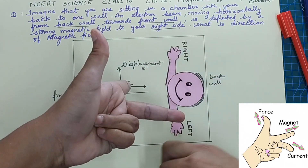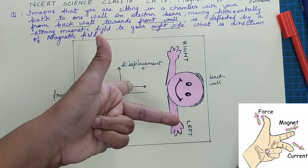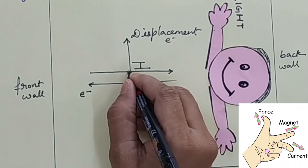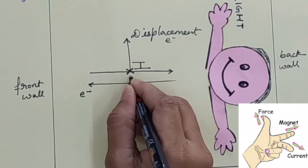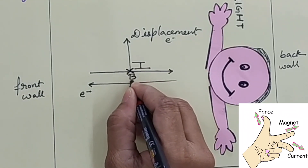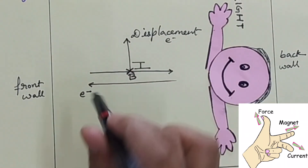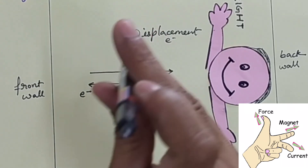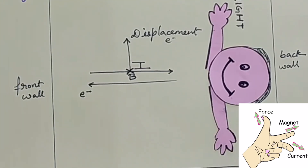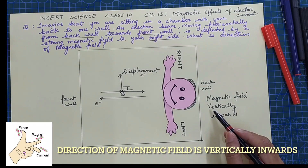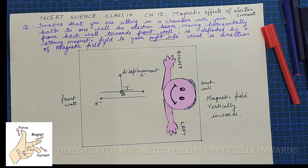The forefinger gives the direction of the magnetic field, which is vertically inwards. The cross symbol indicates that the magnetic field is directed inwards, while a dot symbol means the magnetic field is outwards. So we put a cross symbol to indicate the direction of magnetic field, which is vertically inwards.